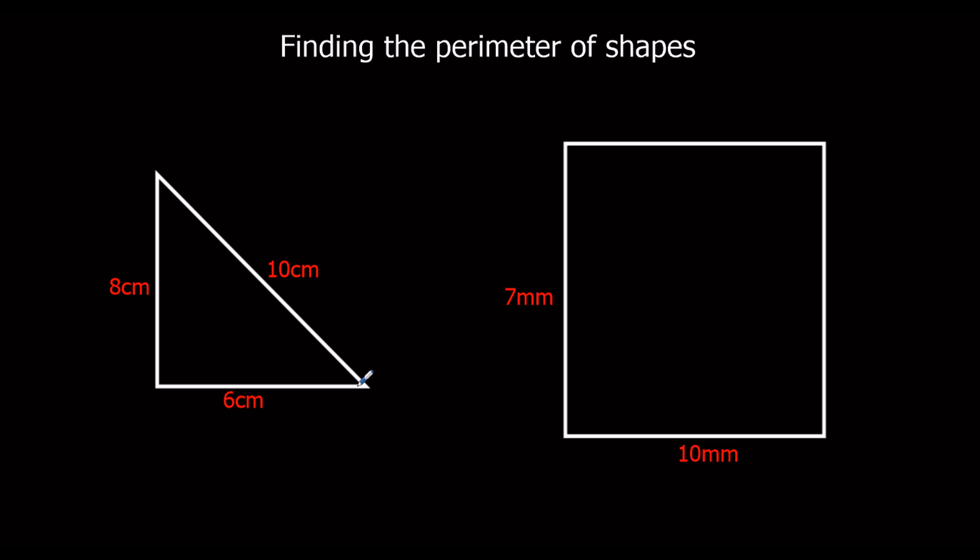So we've got three sides of the triangle: we've got 8, 6, and 10. So that's every length around the edge of the triangle, and then we add them up.